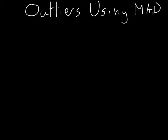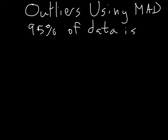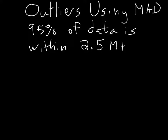It's mostly true — not always true, but most of the time true — that 95% of data in any data set is within 2.5 mean absolute deviations, or MADs, of the mean.